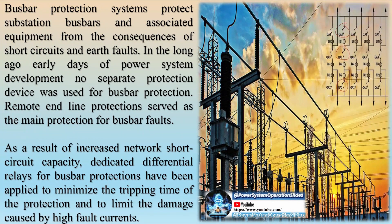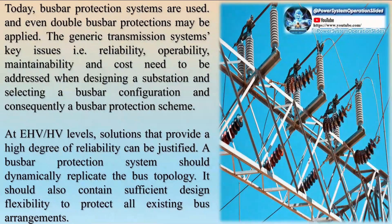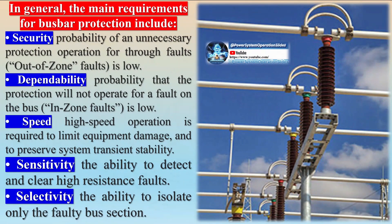The principle of operation for busbar protection primarily relies on the differential protection method. This method detects faults on busbars and associated equipment by measuring the currents flowing in and out of the busbar. The busbar protection system operates on Kirchhoff's first law, which states that the sum of currents entering a junction must equal the sum of currents leaving it. Under normal conditions, the total current flowing into the busbar should equal the total current flowing out. Any discrepancy indicates a fault.